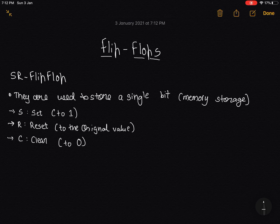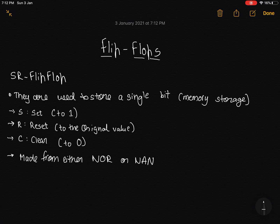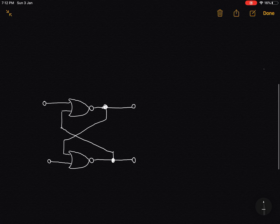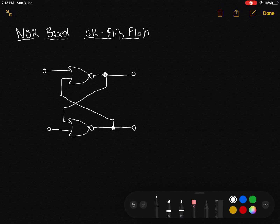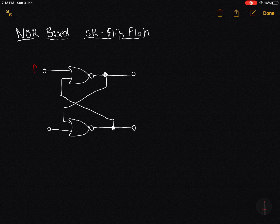Now SR flip-flops have two structures. They are either made from NOR gate or NAND gate. So this is the NOR-based SR flip-flop. Make sure to have a good look at it. This is R, this is S, Q and Q complement. Q and Q complement are the two outputs we will have.